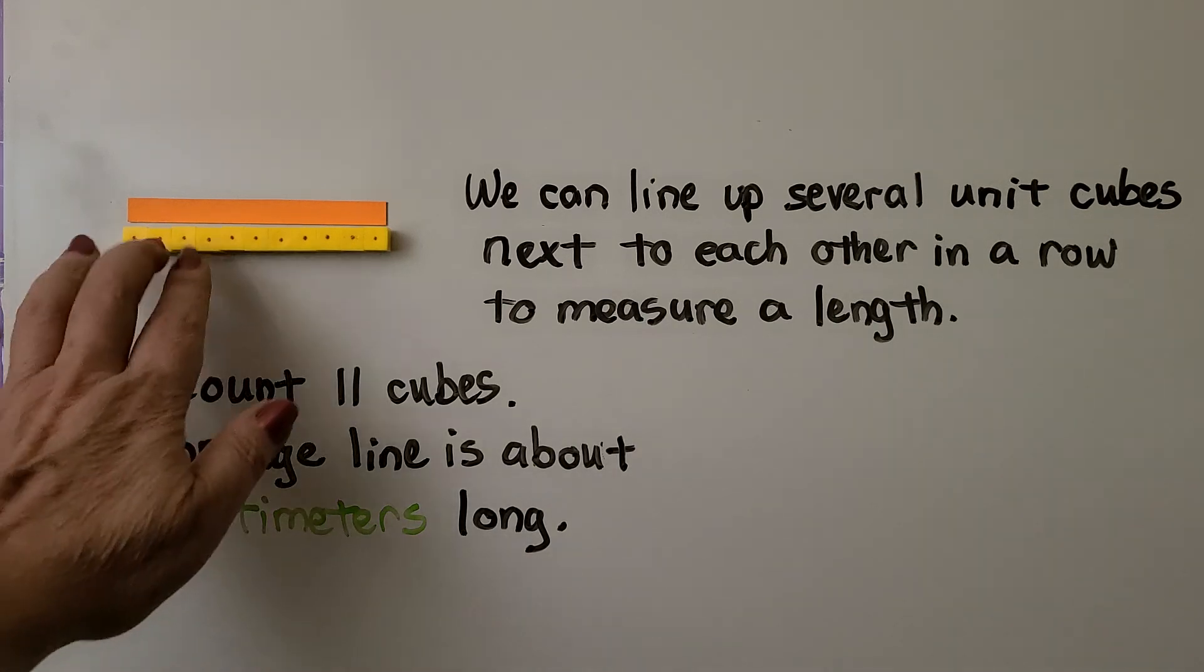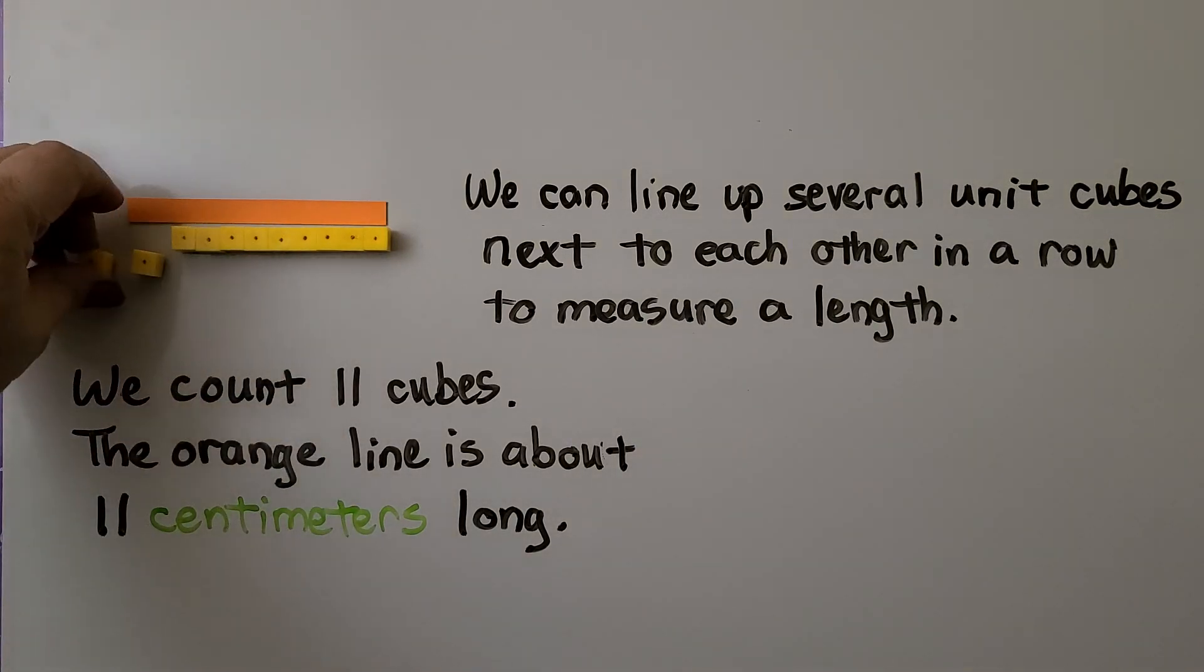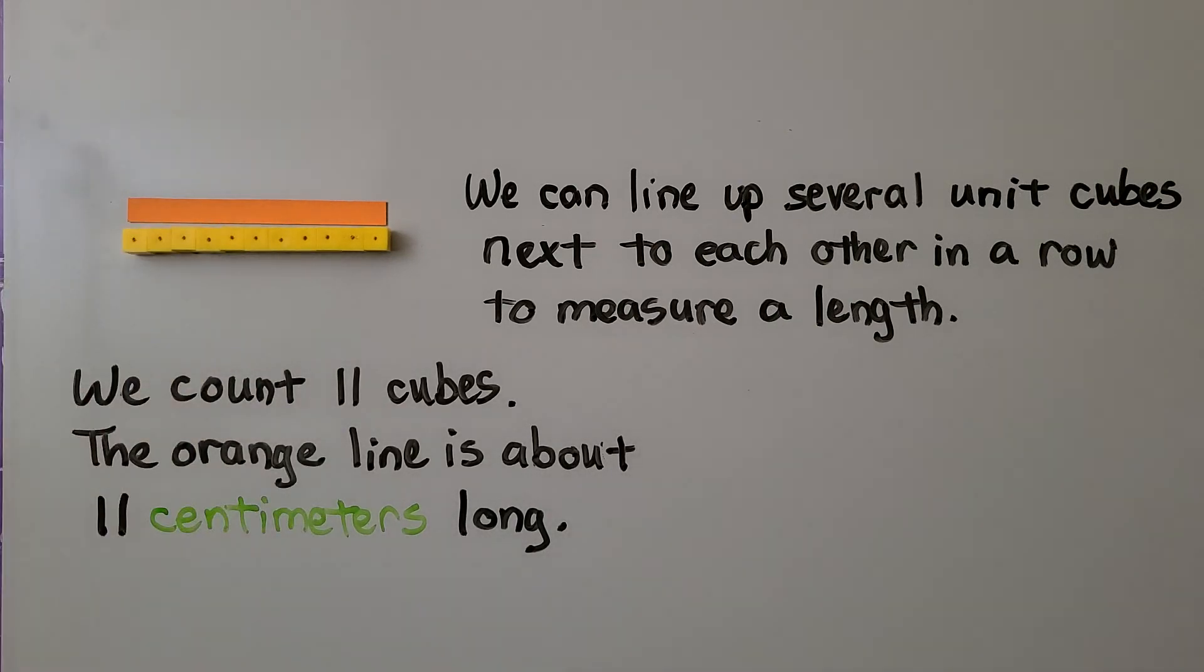We just took 11 unit cubes. These are all separate and we put them together in a row, next to the orange line. We counted the unit cubes as about one centimeter each. We have 11 of them, so the orange line is about 11 centimeters long.